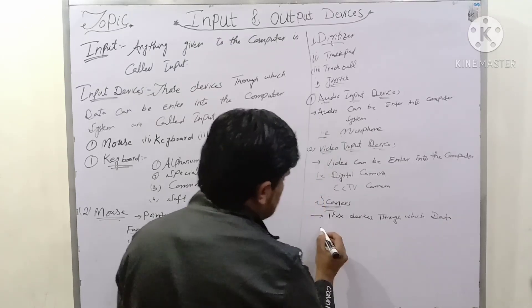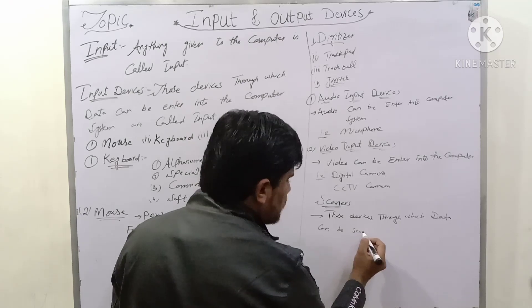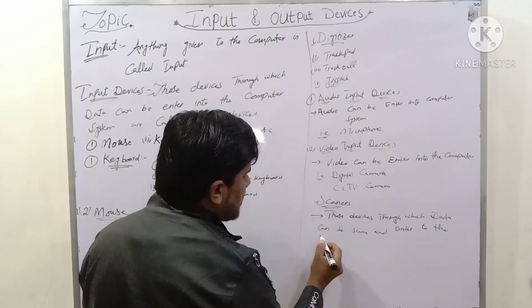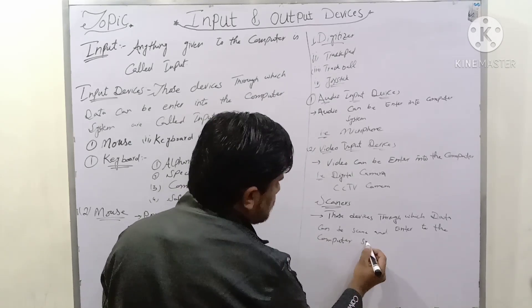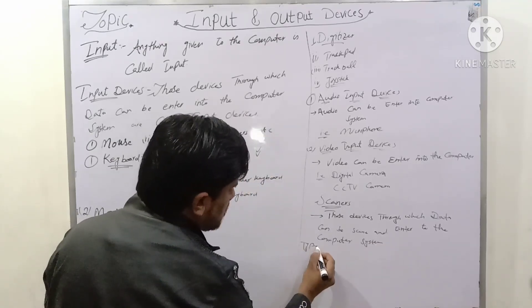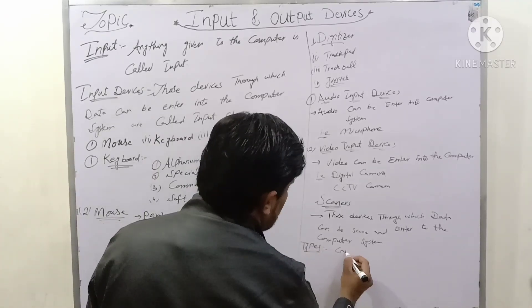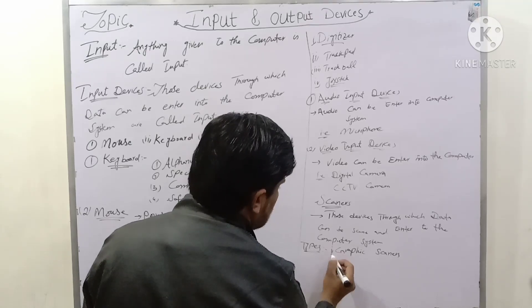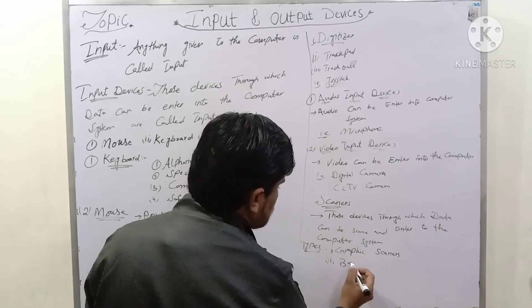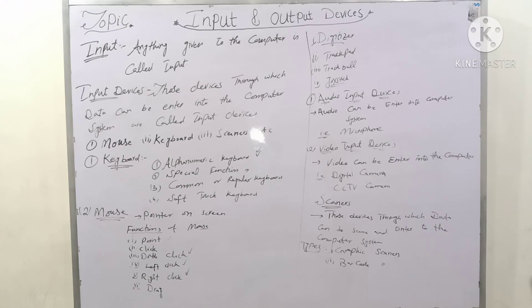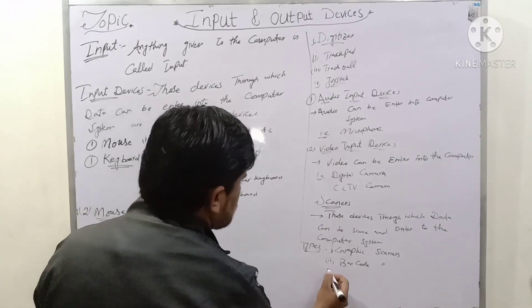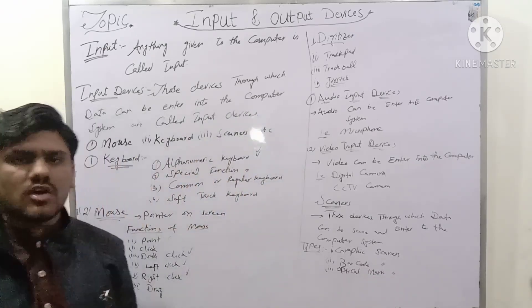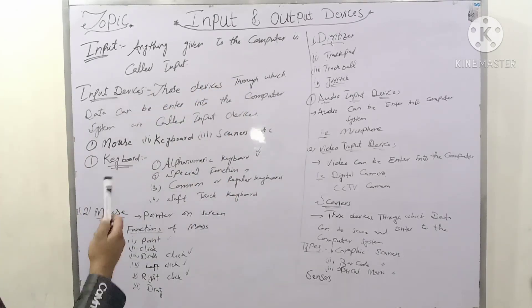Scanners are also input devices. A scanner is a device through which documents can be scanned and entered into the computer system. Types of scanners include: graphic scanners, barcode scanners, and optical mark scanners.